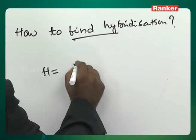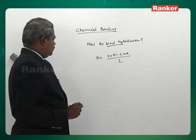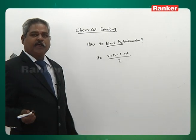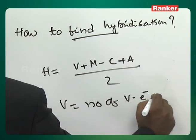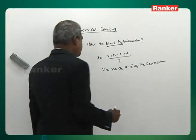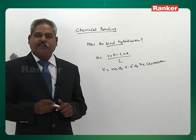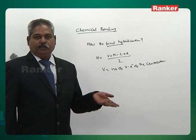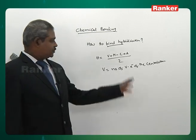How to find hybridization in most cases? H = (V + M − C + A) / 2. Don't worry about the apparent complexity — its application is quite simple. V equals number of valence electrons of the central atom, which in most cases is the group number, except for xenon (which is in group 0 but has 8 valence electrons, so we treat it as group 8).